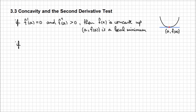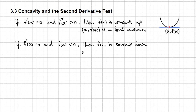If the first derivative f' is zero and the second derivative at point a is negative, then f is concave down, and the point a, f(a), is the local maximum. Graphically, this situation would look something like this.